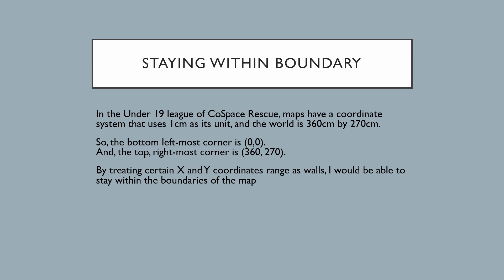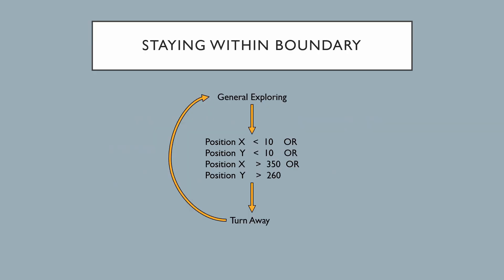In the Under-19 League of Cold Space Rescue, maps have a coordinate system that uses 1cm as its unit, and the world is 360cm by 270cm. By treating certain x and y coordinate ranges as walls, I would be able to stay within the boundaries of the map. When the robot is exploring and lands on certain coordinates, it will turn away and continue exploring.